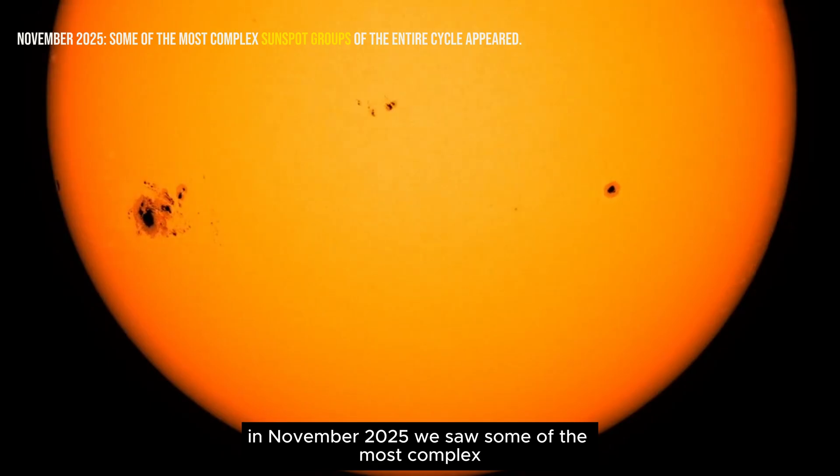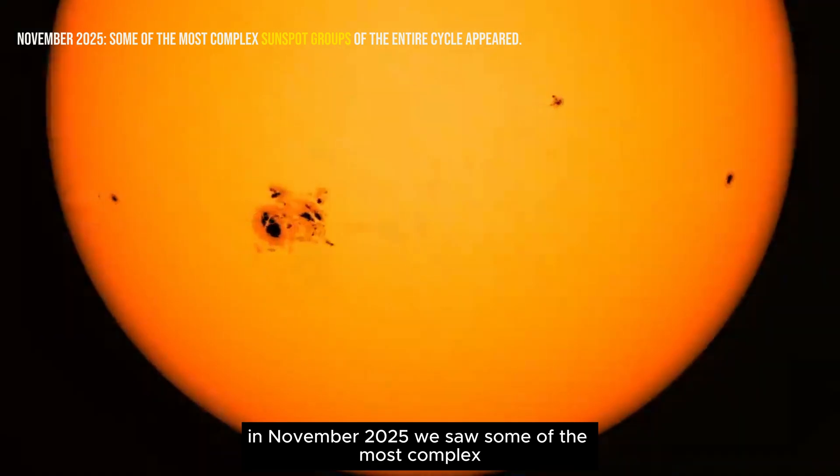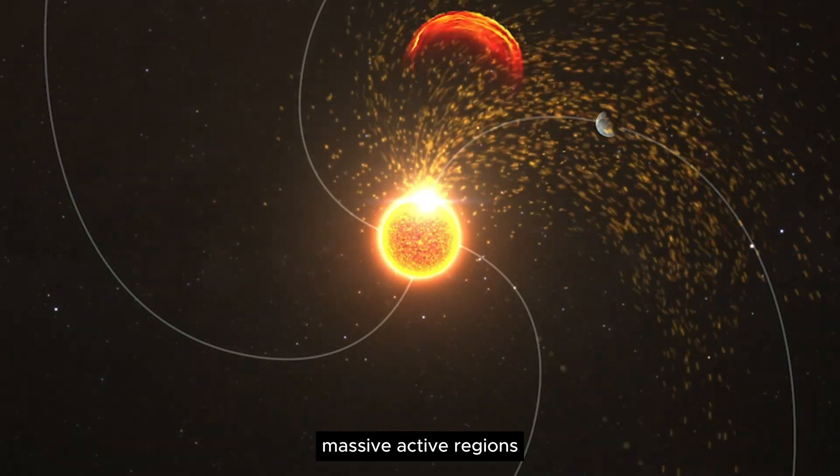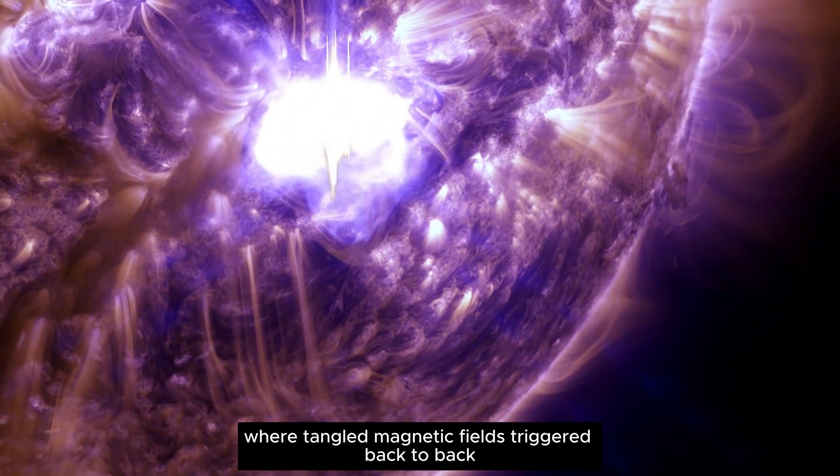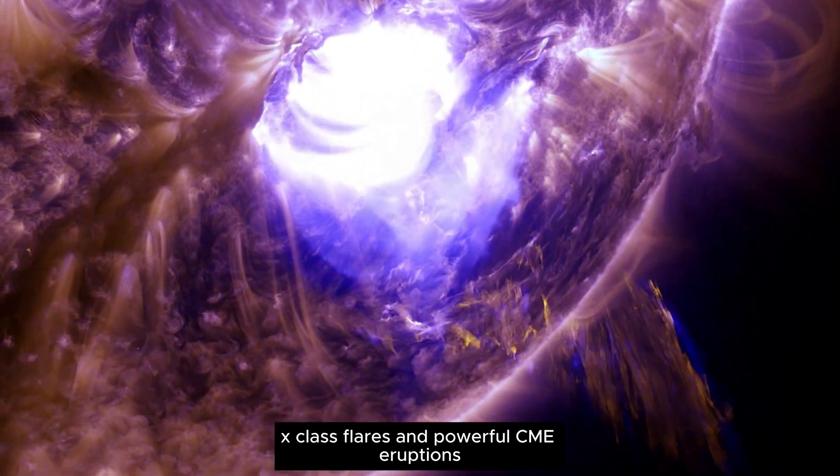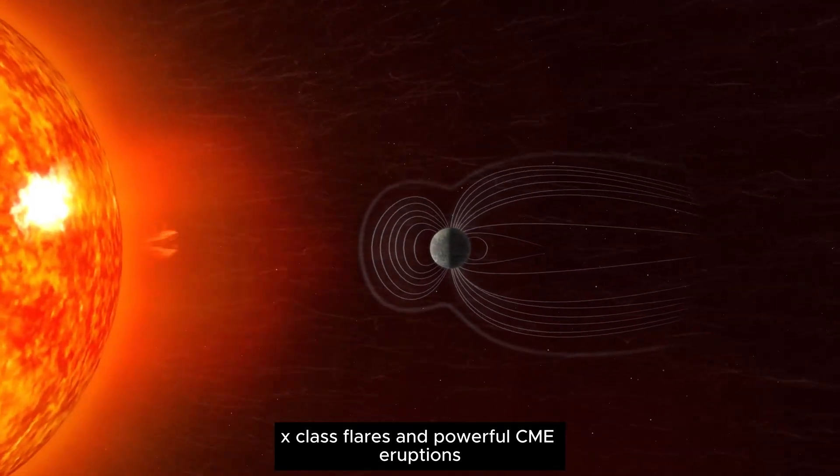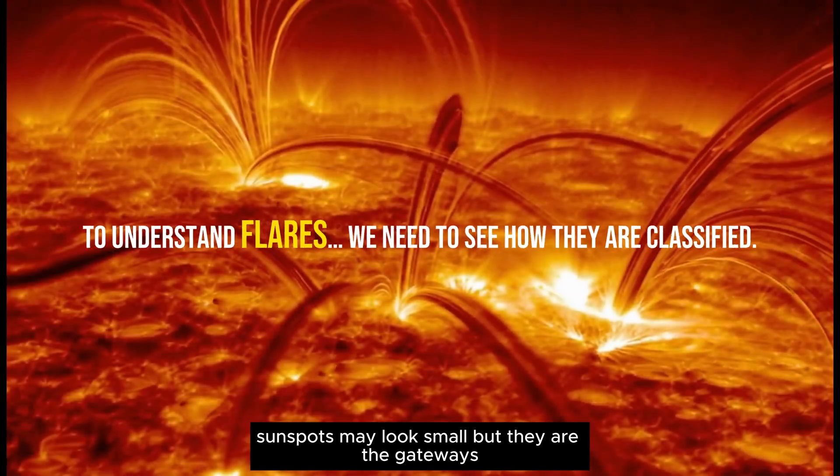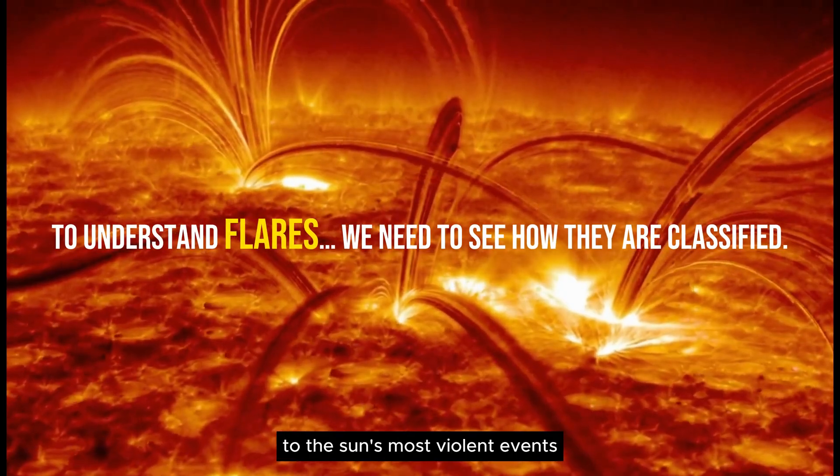In November 2025, we saw some of the most complex sunspot groups of the entire cycle. Massive active regions where tangled magnetic fields triggered back-to-back X-class flares and powerful CME eruptions. Sunspots may look small, but they are the gateways to the sun's most violent events.